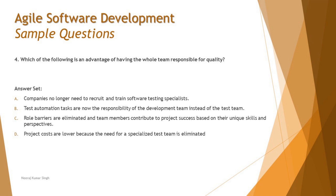So we have the question and the context as two different things. Option A says 'companies no longer need to recruit and train software testing specialists' — that is incorrect, because the responsibilities and the roles are different things. Option B says 'test automation tasks are now the responsibility of the development team instead of the testing team' — development team includes architects, developers, and testers, and the test team still owns test execution, so B is also ruled out.